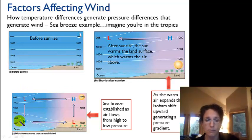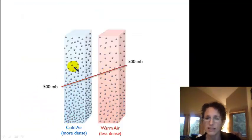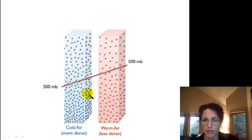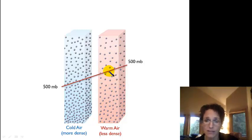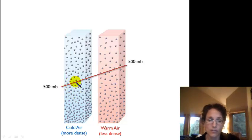The sea breeze is air that moves from the ocean to the land in the afternoon after it's been hot. Let's think a little more about warm air being less dense and why it sets up that pressure gradient. Imagine our column of warmer air where those air molecules are spread out more, so the point at which we're at, say, 500 millibars is higher in elevation than it is in a column of colder air.